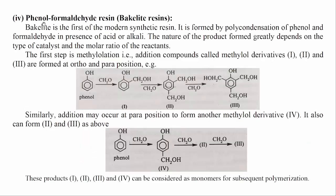4. Phenol formaldehyde resin — Bakelite resins. Bakelite is the first of the modern synthetic resins. It is formed by polycondensation of phenol and formaldehyde in the presence of acid or alkali. The nature of the product formed greatly depends on the type of catalyst and the molar ratio of the reactants. The first step is methylolation, i.e., addition compounds called methylol derivatives are formed at ortho and para positions.